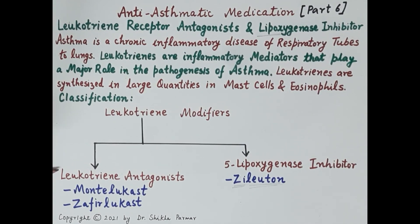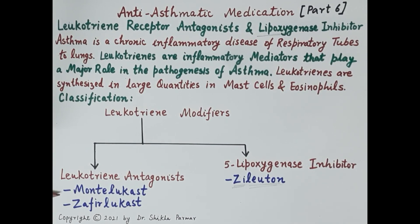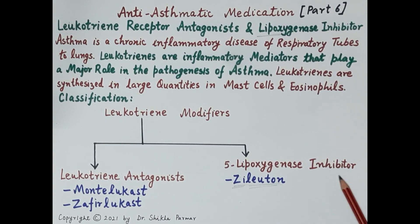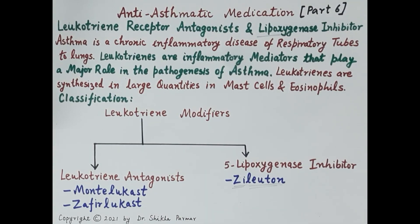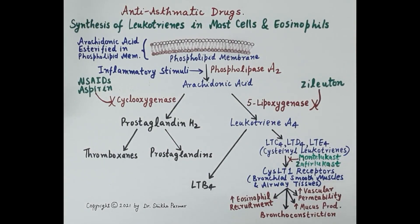Let's classify leukotriene modifiers. They are of two types. The first type is leukotriene antagonists, which competitively antagonize cysteinyl leukotriene 1 receptors located on bronchial smooth muscles and airway tissue. Examples are montelukast and zafirlukast. The second type is 5-lipoxygenase inhibitors that inhibit the enzyme 5-lipoxygenase and thereby inhibit synthesis of leukotriene B4 and cysteinyl leukotrienes. The drug is zileuton.